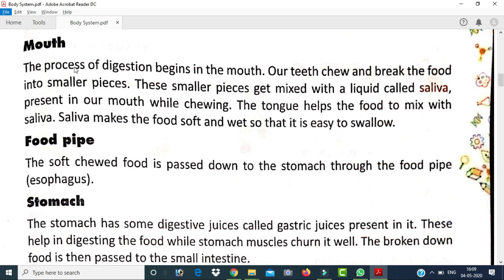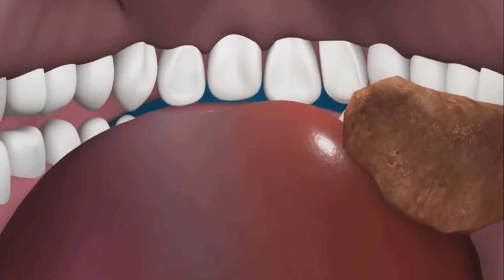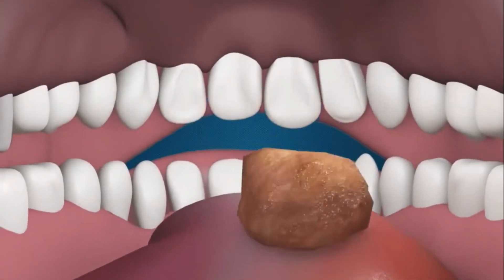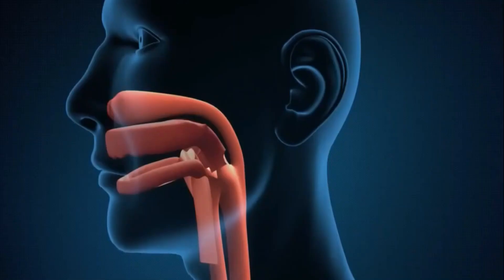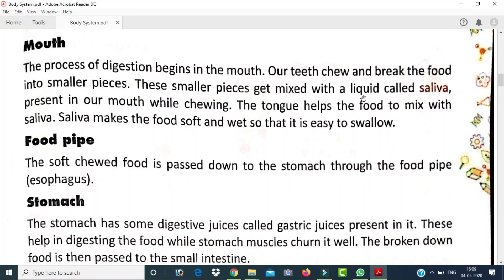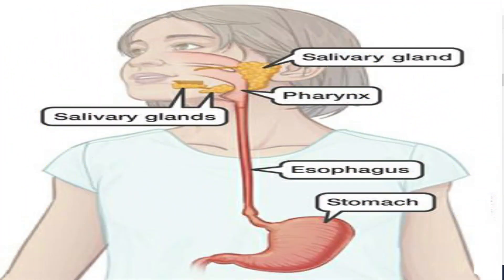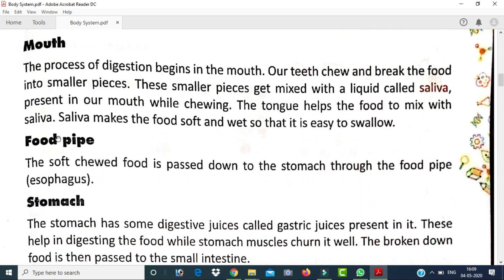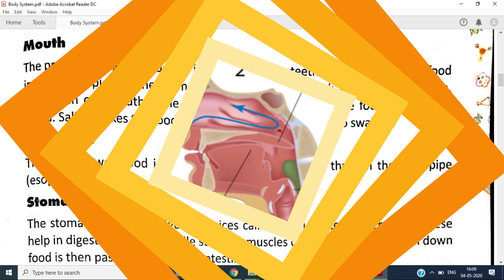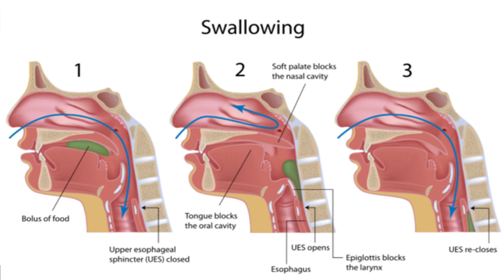The process of digestion begins in the mouth. Our teeth chew and break the food into smaller pieces. These smaller pieces get mixed with a liquid called saliva present in our mouth. While chewing, the tongue helps the food mix with saliva. Saliva makes the food soft and wet so that it is easy to swallow.